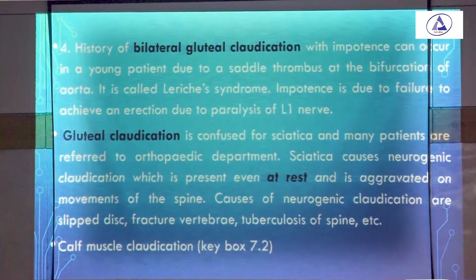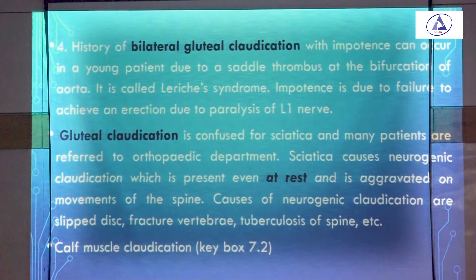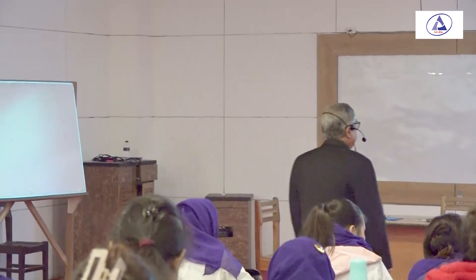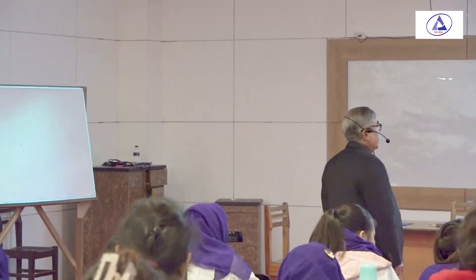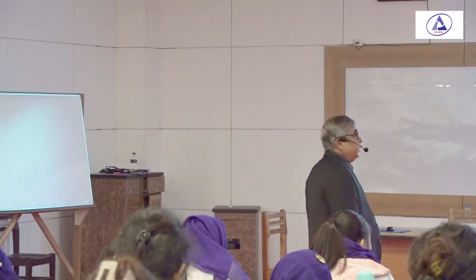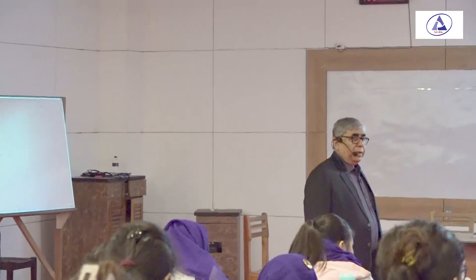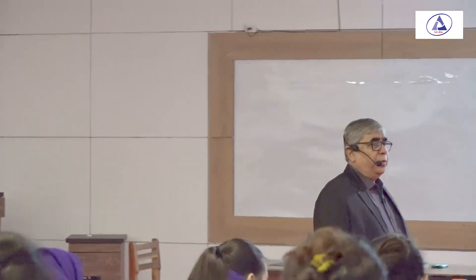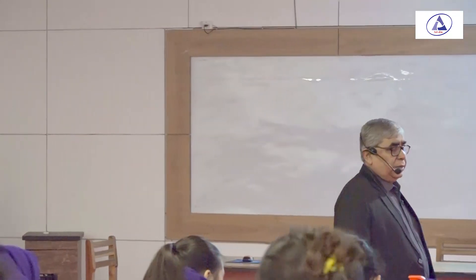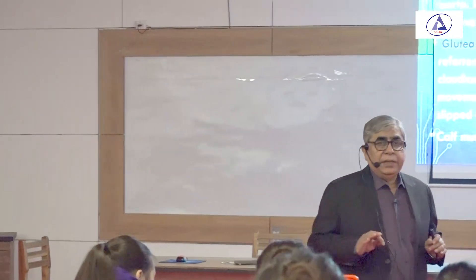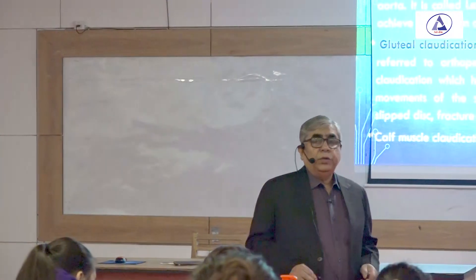Causes of neurogenic claudication are important to understand. These include slipped intervertebral discs, where the disc slips and puts pressure on the nerve.